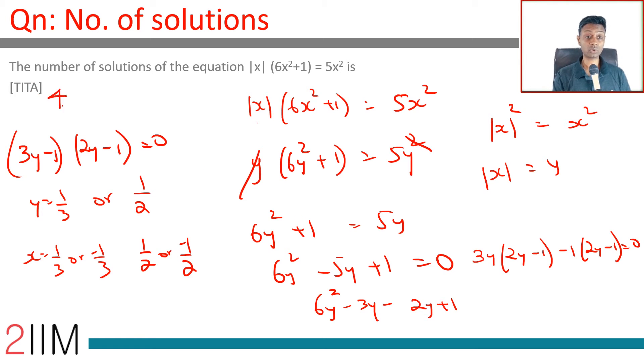Brilliant. The answer is 4. I did this and I got it minus 1. Why? Because at step 1, we cancelled this y. We are cancelling y on both sides. So y = 0 will work.